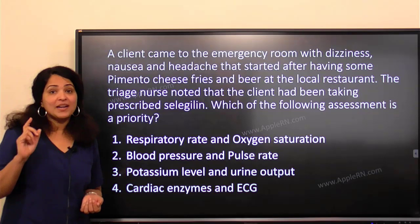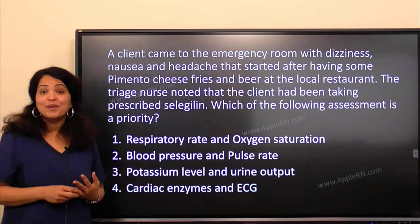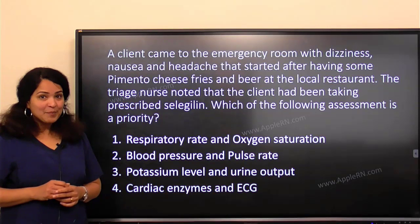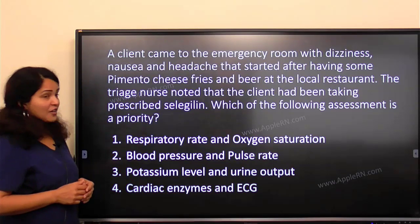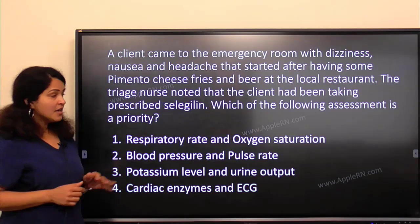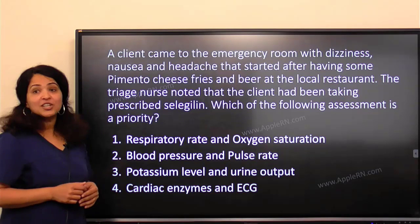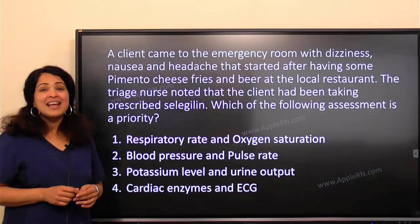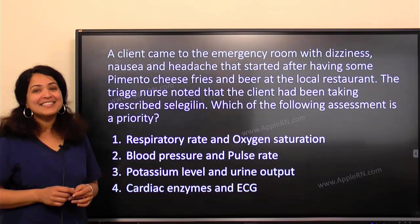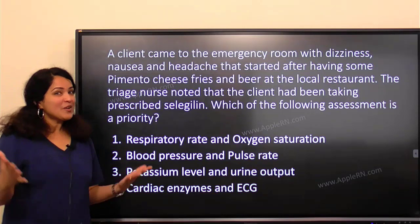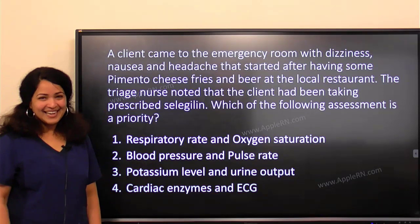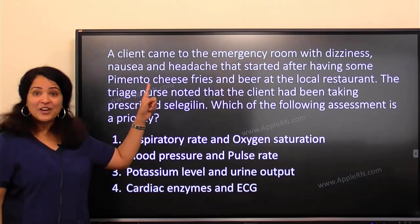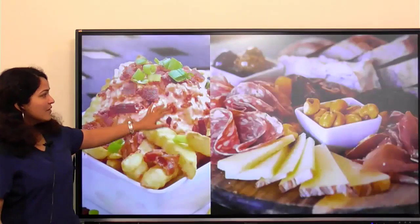We are looking at a priority — what is the number one thing you should be checking with this client? Number one: respiratory rate and oxygen saturation. Number two: blood pressure and pulse rate. Number three: potassium level and urine output. Number four: cardiac enzymes and ECG. What do you think? Let's do this together.